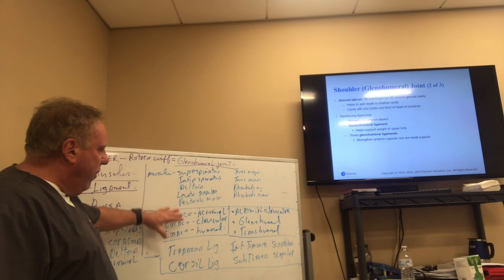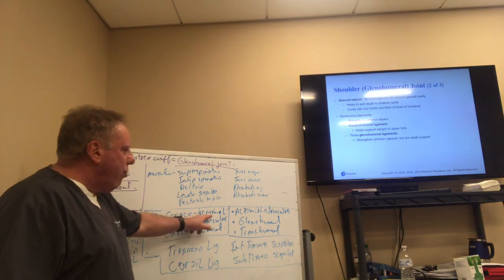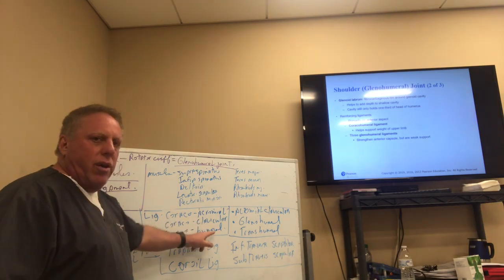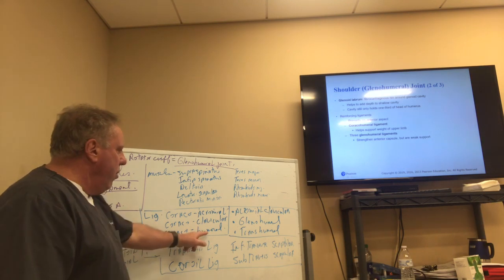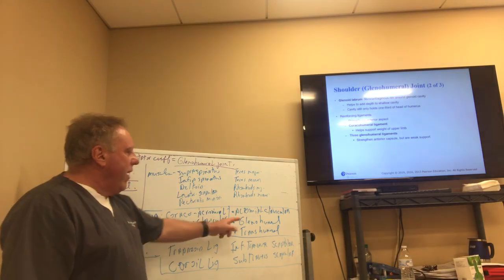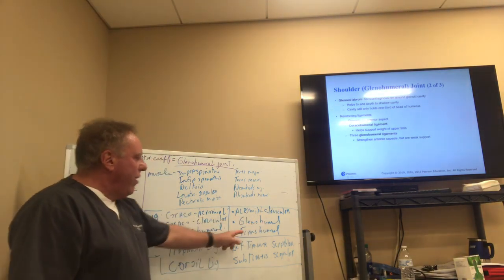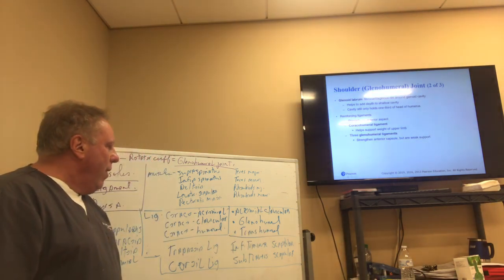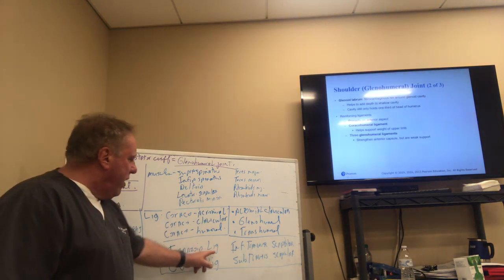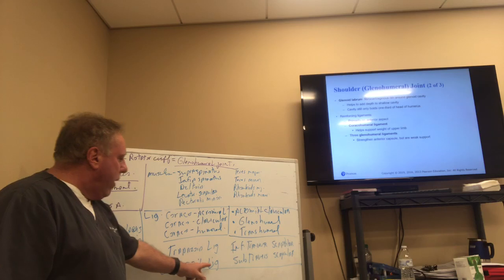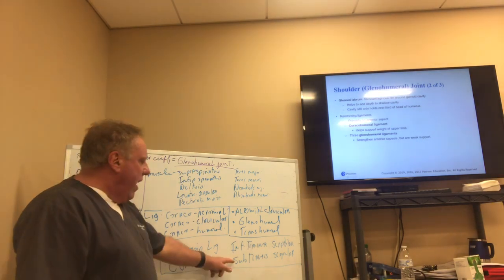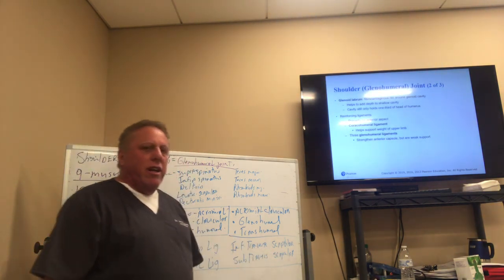A lot of it has a little bit of continuity to it: the coracoacromial ligament, the coracoclavicular ligament, the coracohumeral ligament — because it connects to the humerus — the acromioclavicular ligament, the glenohumeral ligament, and the transhumeral ligament. That's just six of them. There are actually 10 of them. So you have a trapezoid ligament, a coracoid ligament, an inferior transverse scapular ligament, and a sub-transverse scapular ligament.